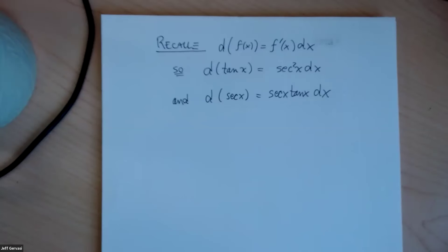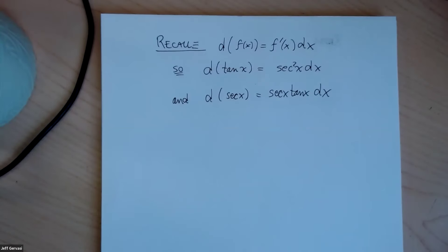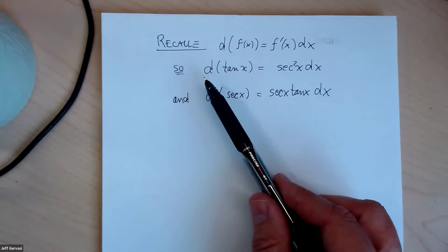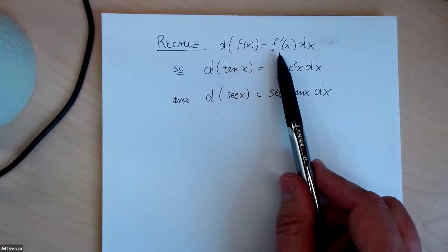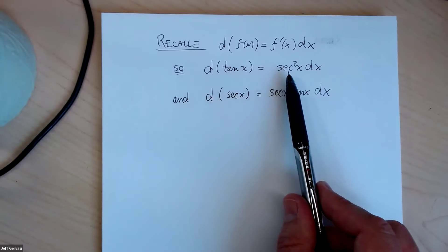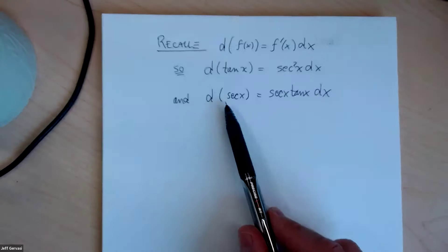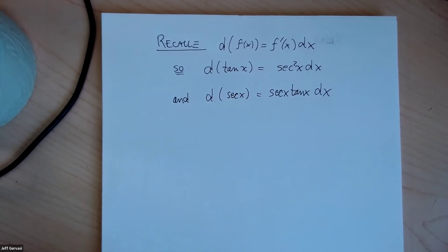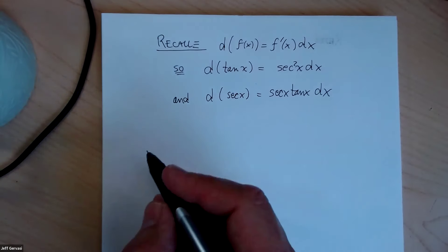In a separate video, we showed how to integrate products of sines and cosines, and promised to give another video on products of secants and tangents. As we started that last video, let me remind you all that from calculus one, the differential of a function is equal to the derivative of that function times dx. The differential of the tangent is secant squared of x dx, and the differential of the secant of x is secant of x times tangent of x dx. We're going to be integrating products of secants and tangents — here are a couple of examples.